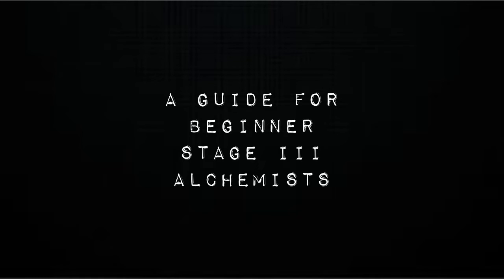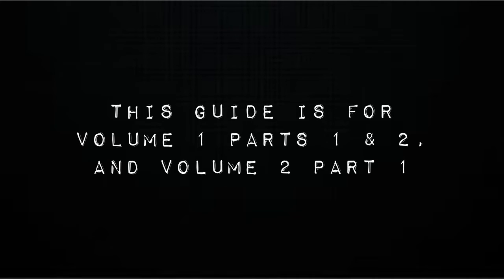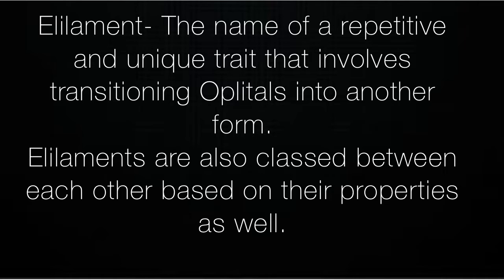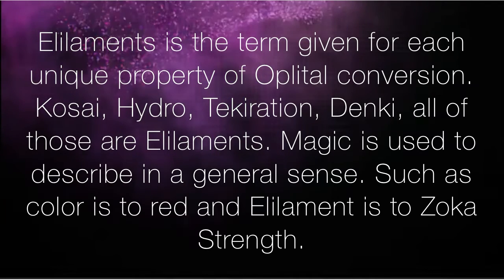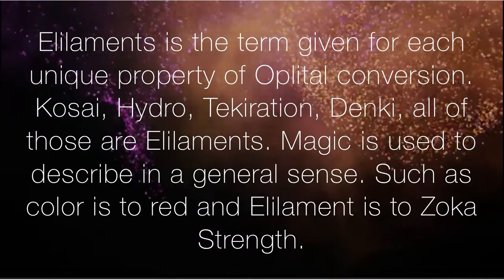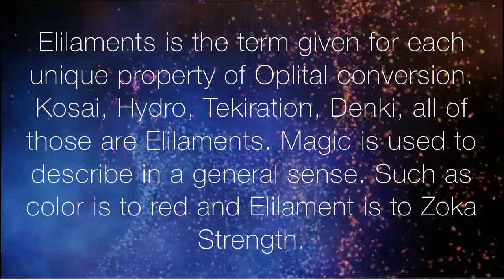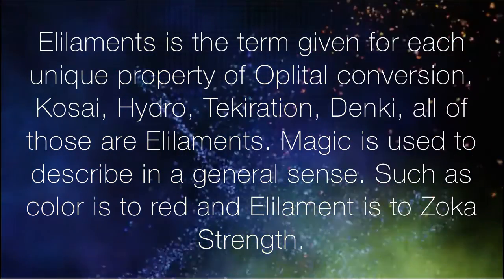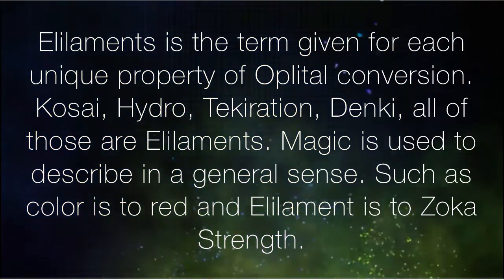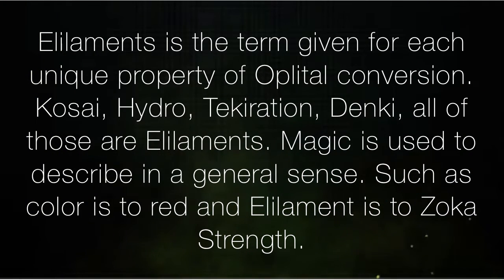A guide for beginner stage 3 alchemists, generation 6, volume 428. This guide covers volume 1 parts 1 and 2, and volume 2 part 1. Alilliment is the name of a repetitive and unique trait that involves transitioning oplotals into another form. Alilliments are also classified against each other based on their properties. Kasai, hydro, decoration, denkai — all of those are alilliments. Magic is used to describe in a general sense, such as color is to red and alilliment is to zokashkent.